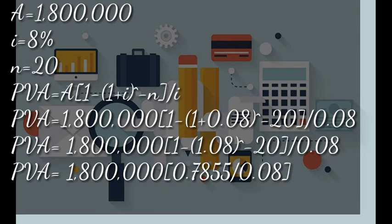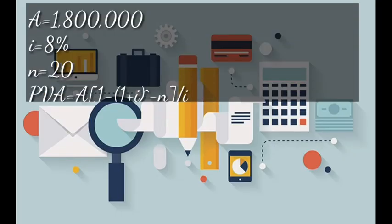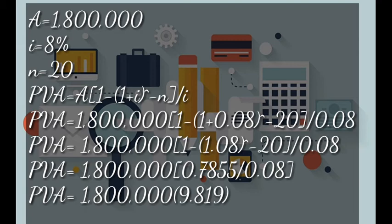When we do the math for everything in the brackets we get 0.7855. So present value of annuity equals 1,800,000 times 0.7855 divided by 0.08. When we divide what is in the brackets we get 9.819. So present value equals 1,800,000 times 9.819.